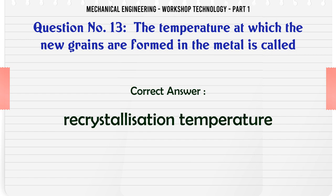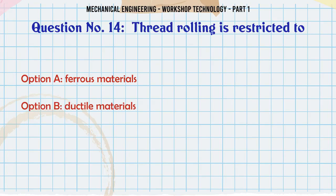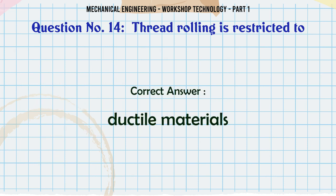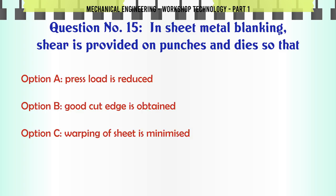Thread rolling is restricted to: A. Ferrous materials. B. Ductile materials. C. Hard materials. D. None of these. The correct answer is: Ductile materials.